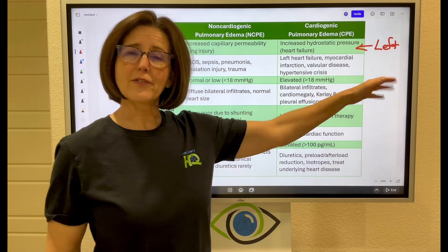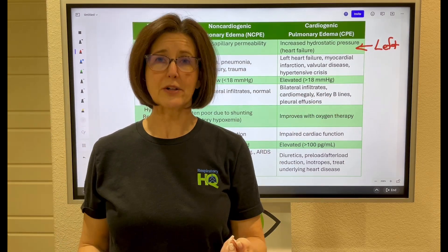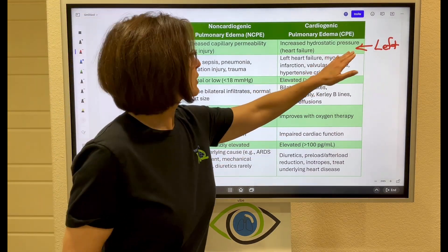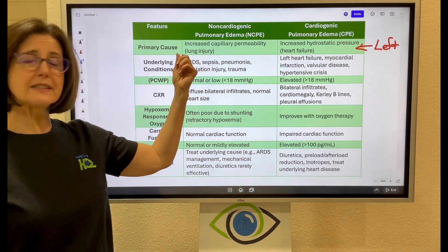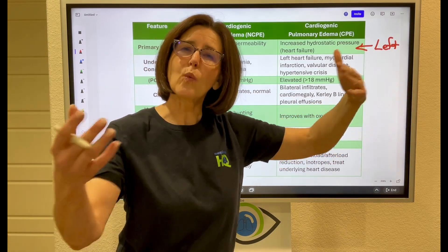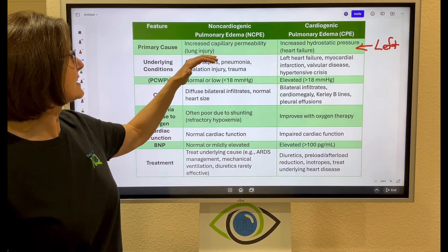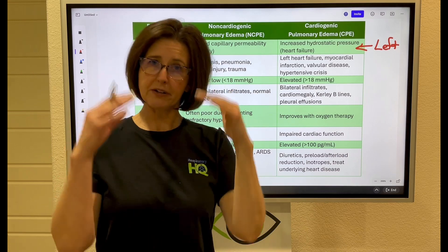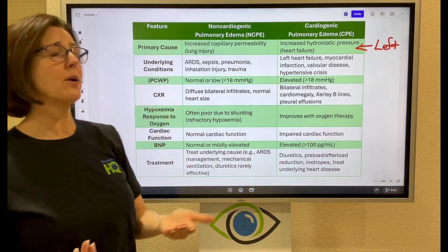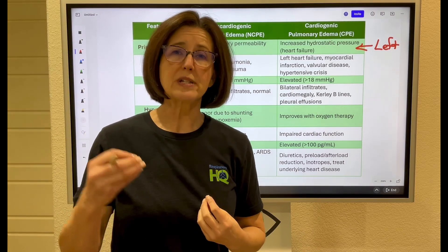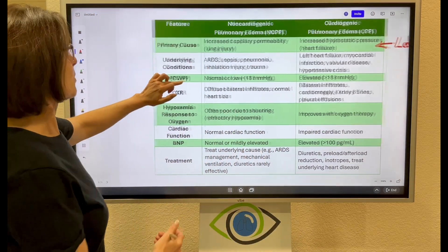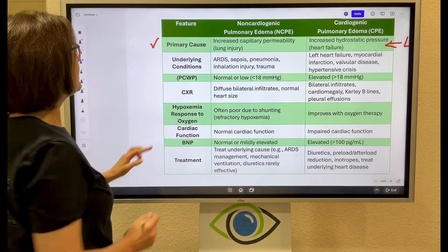With non-cardiogenic pulmonary edema, there is absolutely nothing wrong with the left side of the heart. What it actually is is that the pulmonary capillary beds get leaky — an increased capillary permeability — and this is due to some type of lung injury. That covers the primary cause.